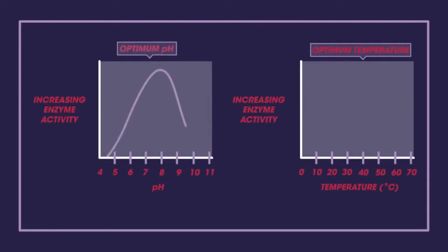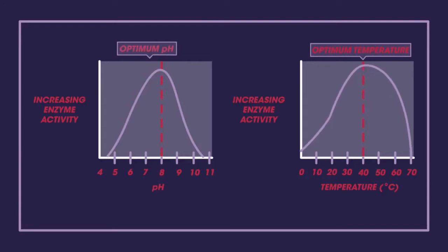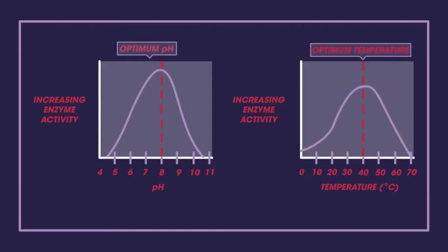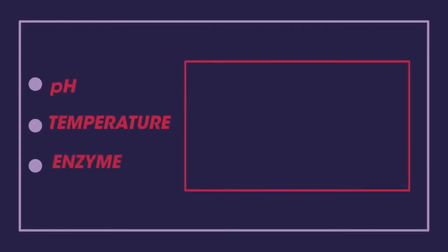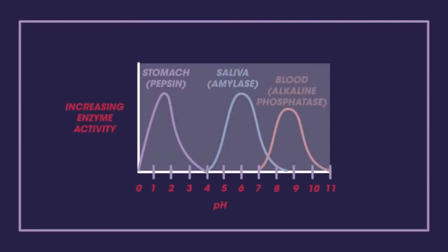Enzymes also have optimum pH and temperature conditions. Up to a point, an increase in temperature causes increased rates of reaction because there is more heat energy — more energy means more collisions. However, above a certain temperature, the rate drops off due to denaturation. We will look at the effect of pH and temperature on enzymes in our video 'Denaturation of Enzymes.' The optimum pH and temperature conditions are specific to the conditions in which they work. An enzyme that works in the stomach, for example, would have a more acidic optimum pH.